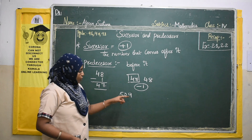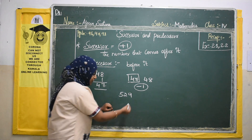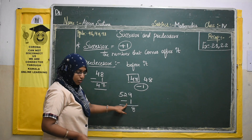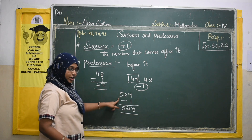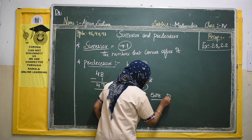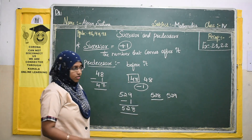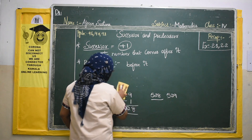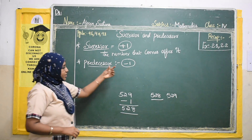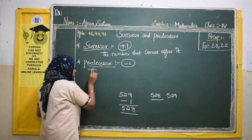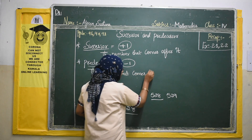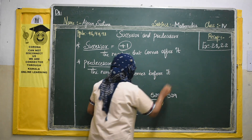Let us take 529. What is the predecessor of 529? We will do minus 1. So 9 minus 1 is 8. The other digits stay the same: 2 and 5. So the predecessor of 529 is 528. Therefore 528 comes before 529. Predecessor means the number that comes before it.